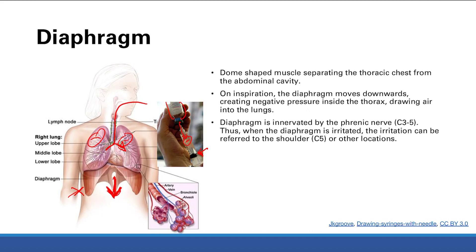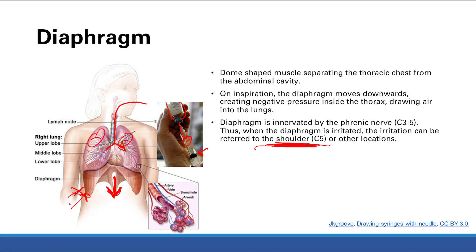The diaphragm is innervated by the phrenic nerve, which is C3 to C5. So if you irritate the diaphragm, you can feel that irritation or pain referred to other parts of the body — for example, the shoulder, which is innervated by C5. So if you have shoulder pain for some reason, it might be due to diaphragmatic irritation.